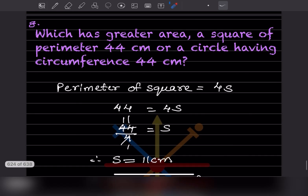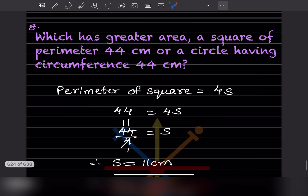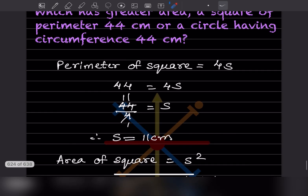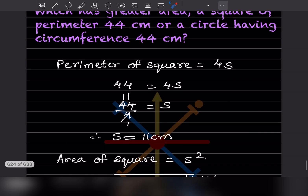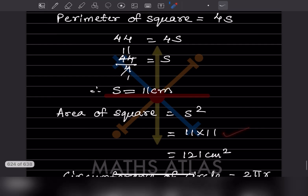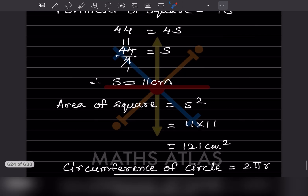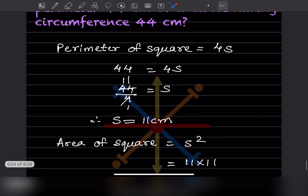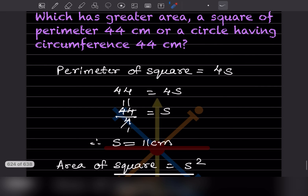Now let us find the area of the square first, since we need to compare which has the greater area. The formula for area of a square is side squared. We got side = 11, so that will be 11 × 11 = 121 centimeter square.